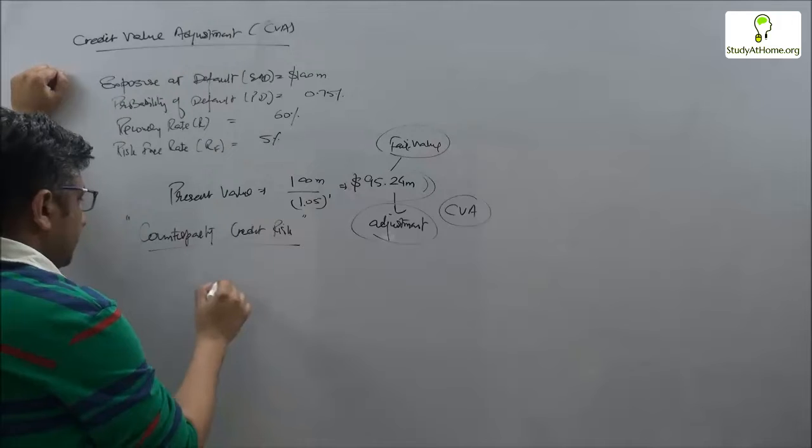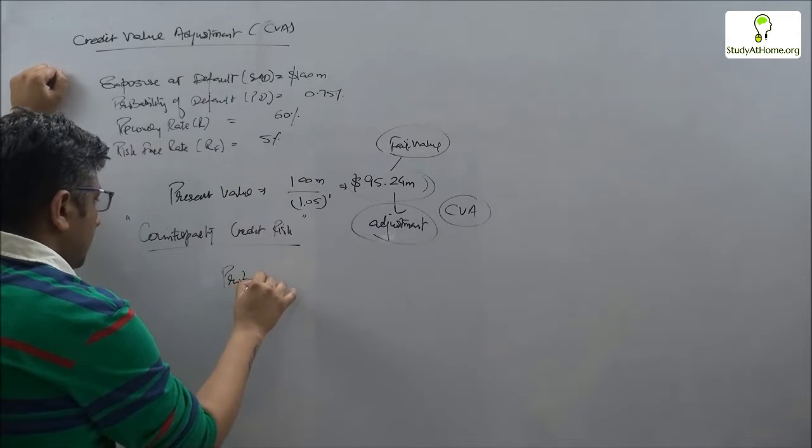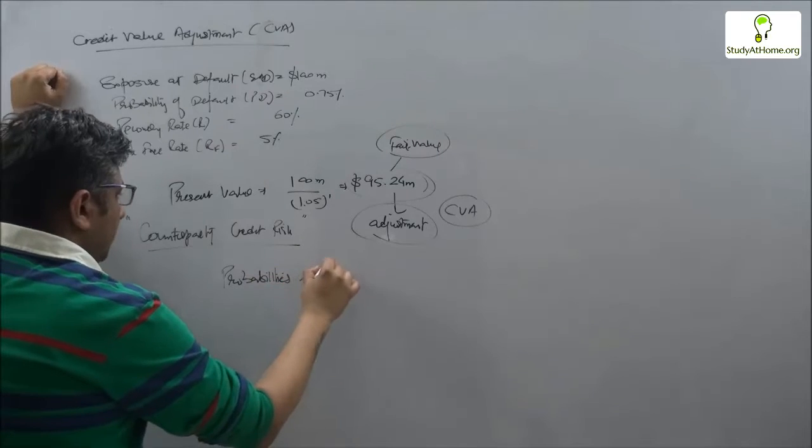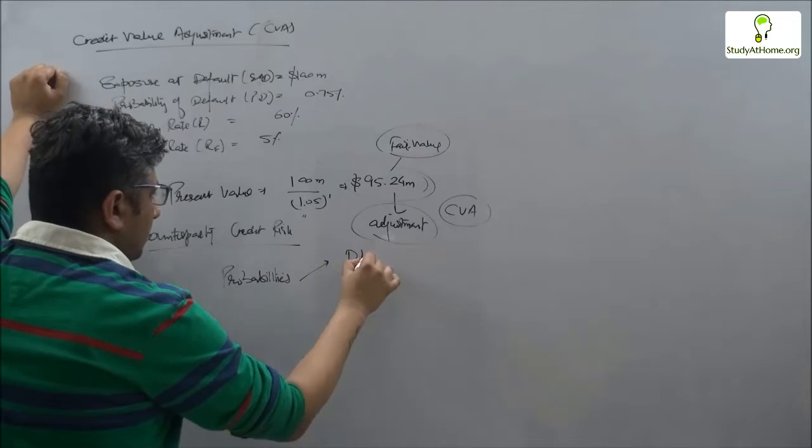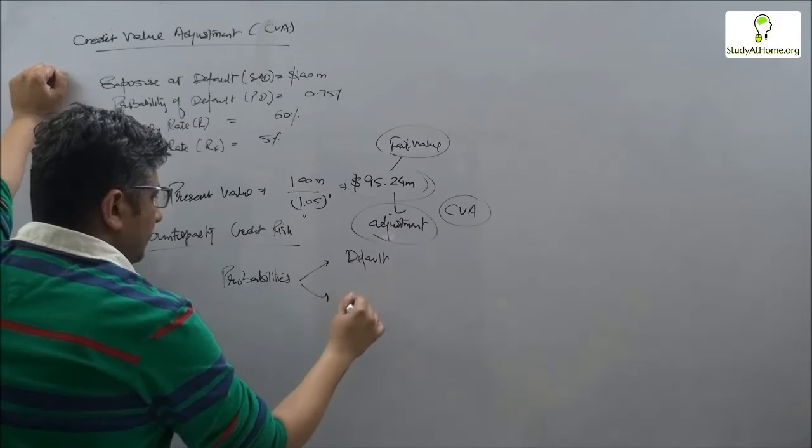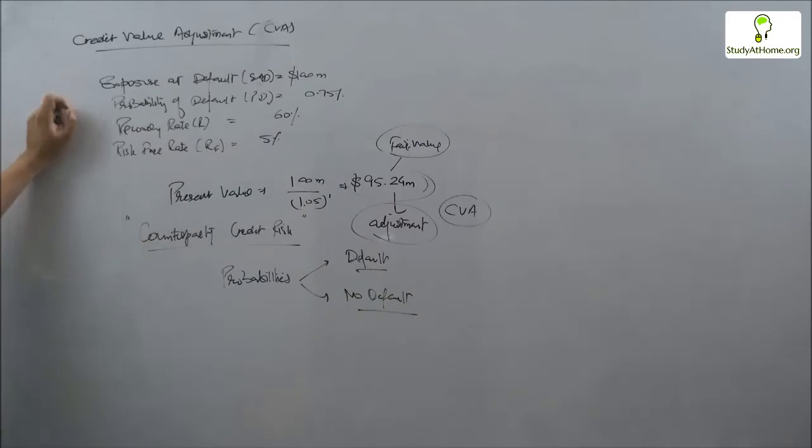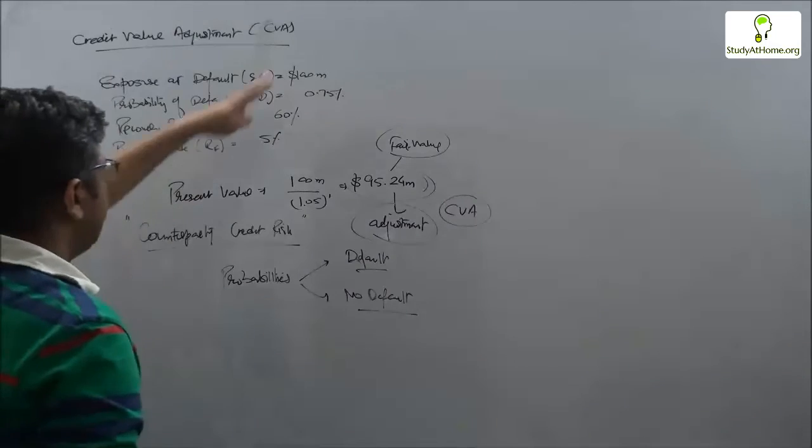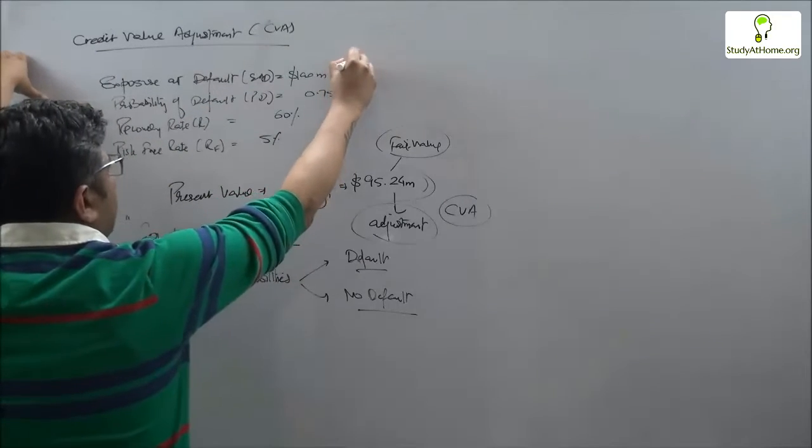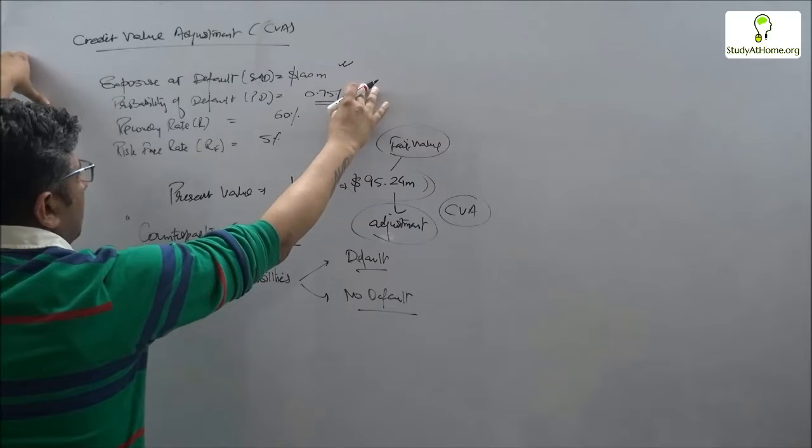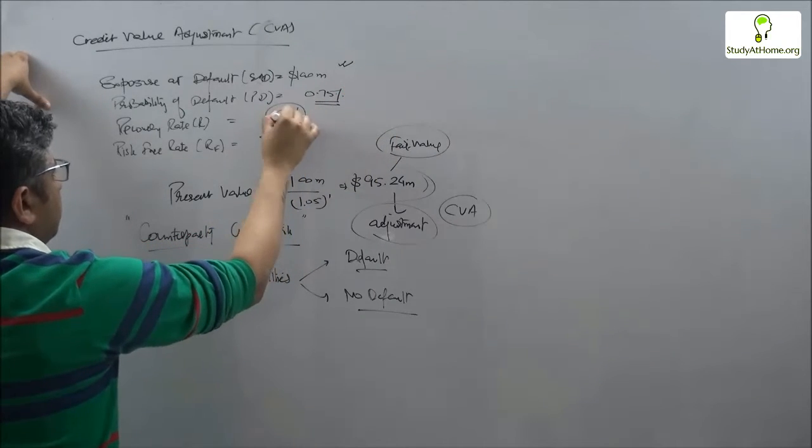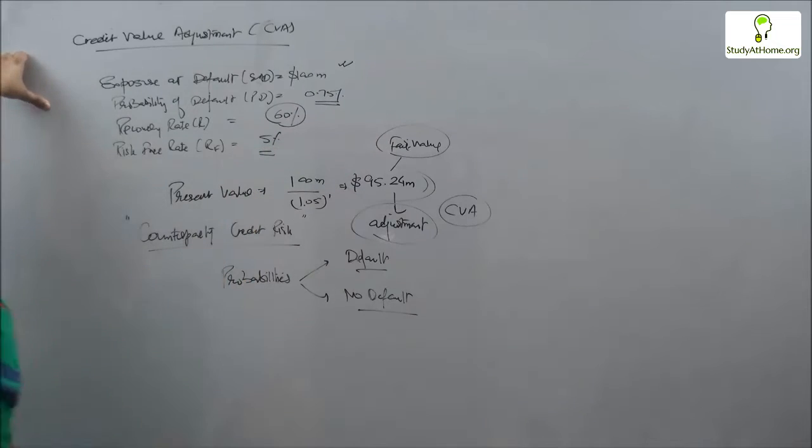How do we calculate that? The thought process is fairly simple. We assign the probabilities that there could be a default and there may not be a default - purely a binomial theory here. We are given the exposure at default is 100 million dollars, probability of default at 0.75 percent, recovery rate at 60 percent, and we have used 5 percent for the present value.